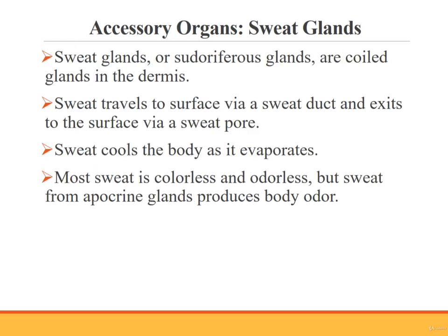Sweat glands, or sudoriferous glands, are found throughout the body. They are coiled glands found in the dermis. Sweat travels to the surface of the skin via a sweat duct, and the surface opening is a sweat pore. Sweat is sometimes called perspiration, and it cools the body as it evaporates. Sweat is normally colorless and odorless, even though it contains a small amount of waste product. However, special sweat glands called apocrine glands are found in the underarm and pubic areas. They release a thicker sweat that can produce an odor when it comes into contact with bacteria on the skin — this is what is known as body odor. Apocrine glands become active during puberty.